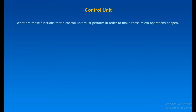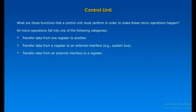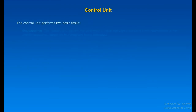We can define the functional requirements for the control unit — those functions that the control unit must perform in order to cause micro-operations. A definition of these functional requirements is the basis for the design and implementation of the control unit. All micro-operations fall into one of the following categories: transfer data from one register to another; transfer data from a register to an external interface such as the system bus; transfer data from an external interface to a register; or perform an arithmetic or logic operation using registers for input and output.